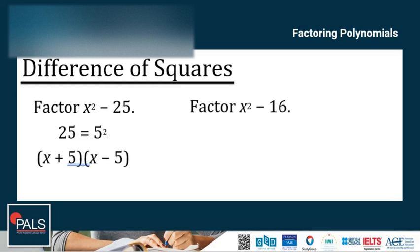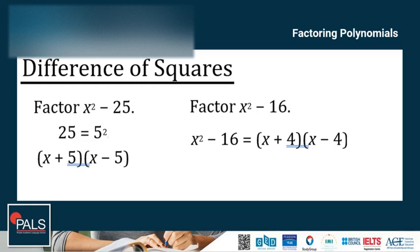Another example: factor x squared minus 16. x squared minus 16 equals (x plus 4)(x minus 4), because the square roots of 16 are positive 4 and negative 4. It is also important to note that the difference of squares technique will only work with the difference of squares — it will not work with the sum of squares. So, for example, x squared plus 25 or x squared plus 16 cannot be factored this way.